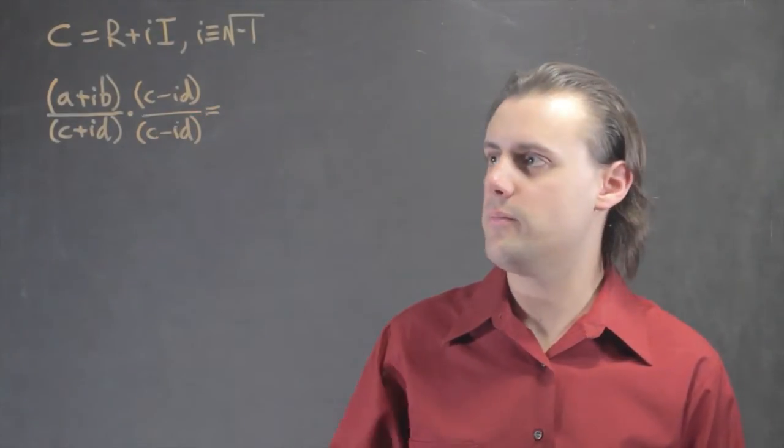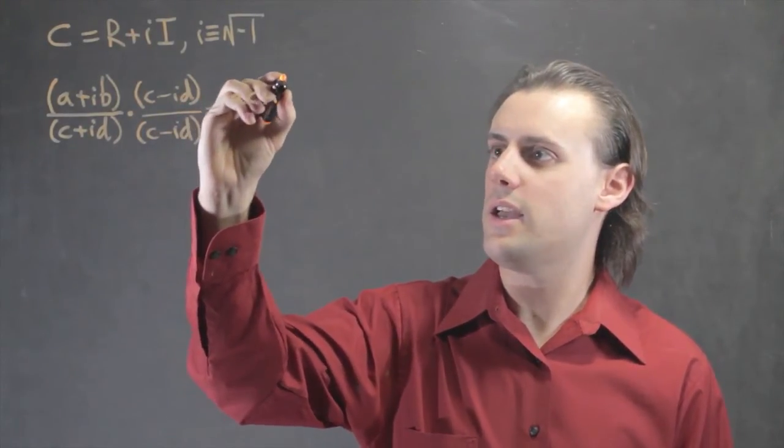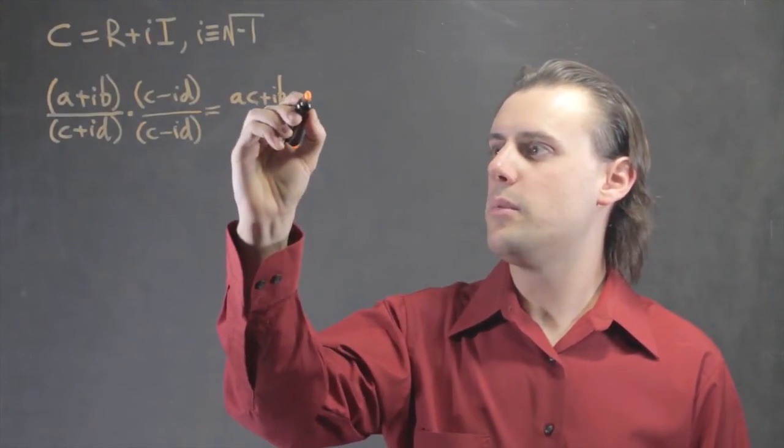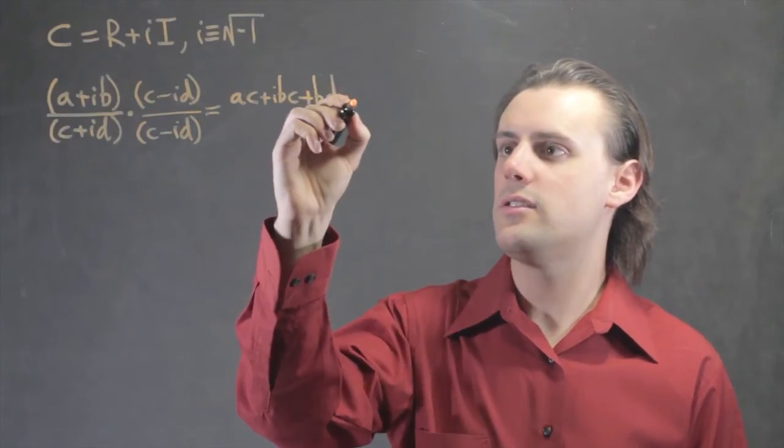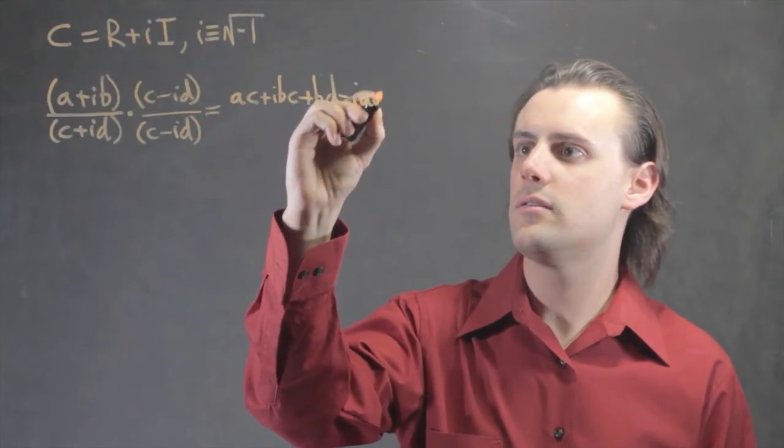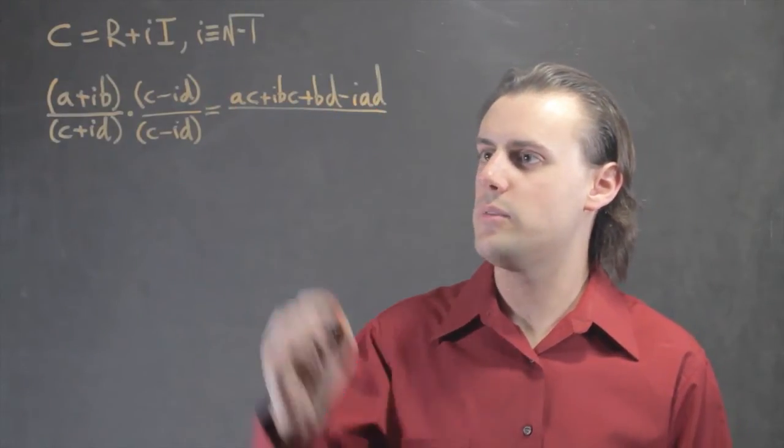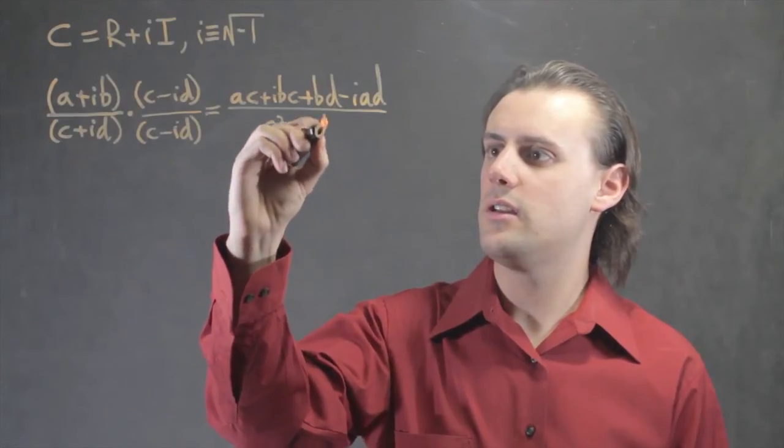When I multiply out the numerator, I'm going to have ac plus ibc plus bd minus iad. And in the denominator, I'm simply going to have c squared plus d squared.